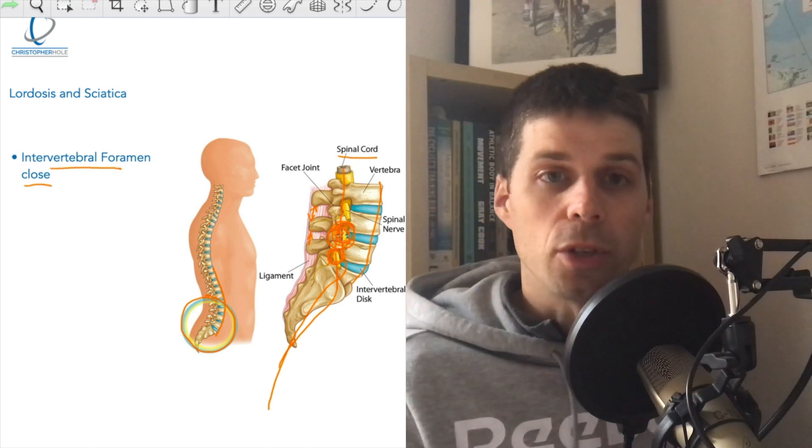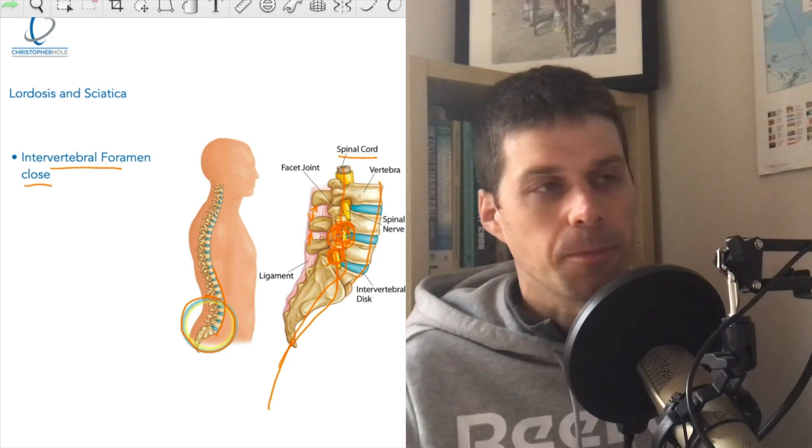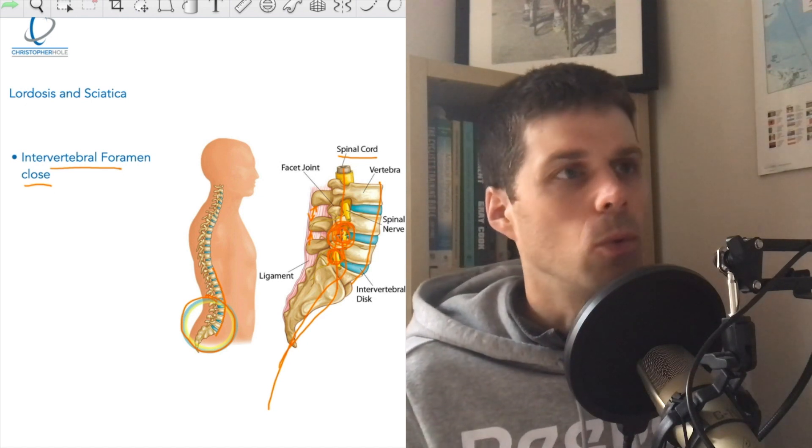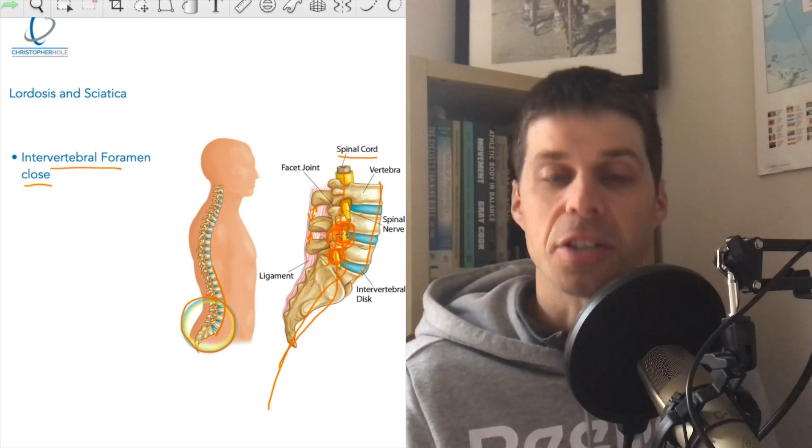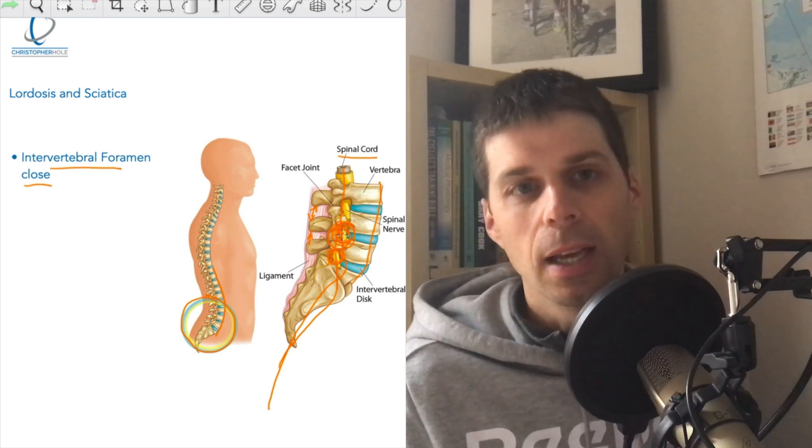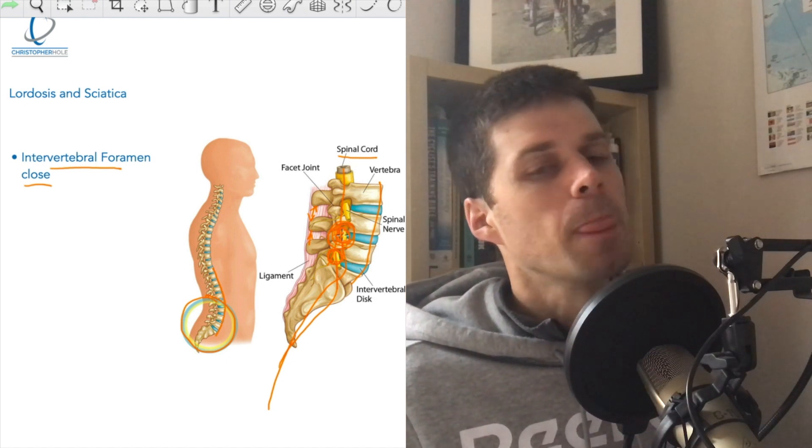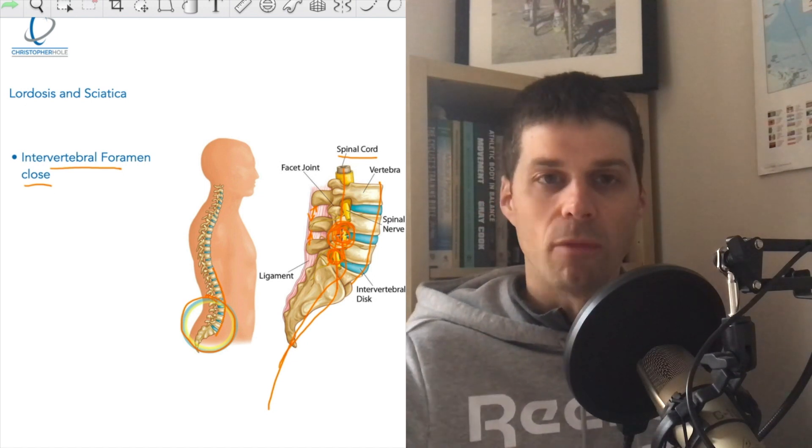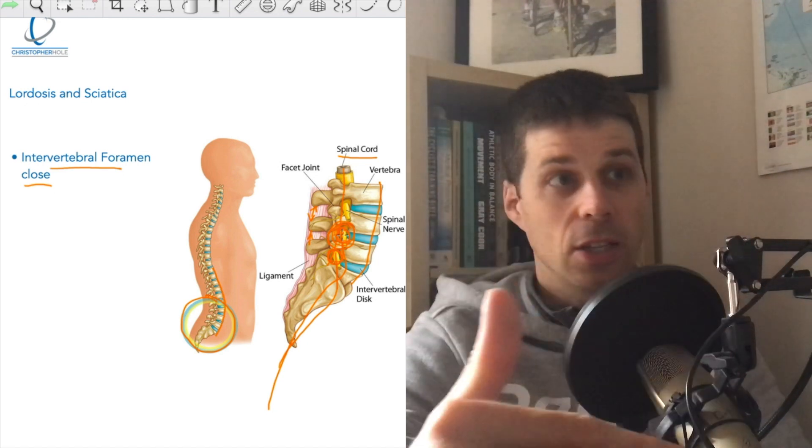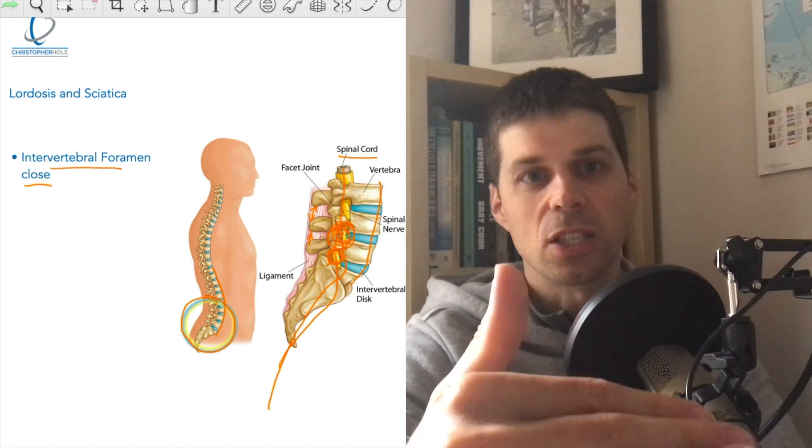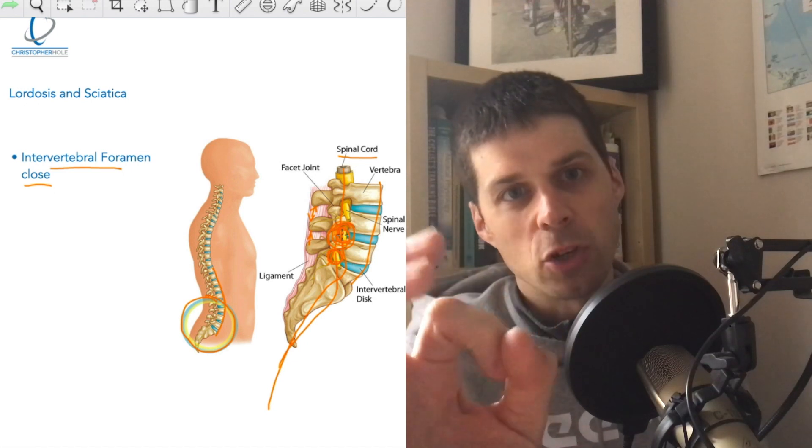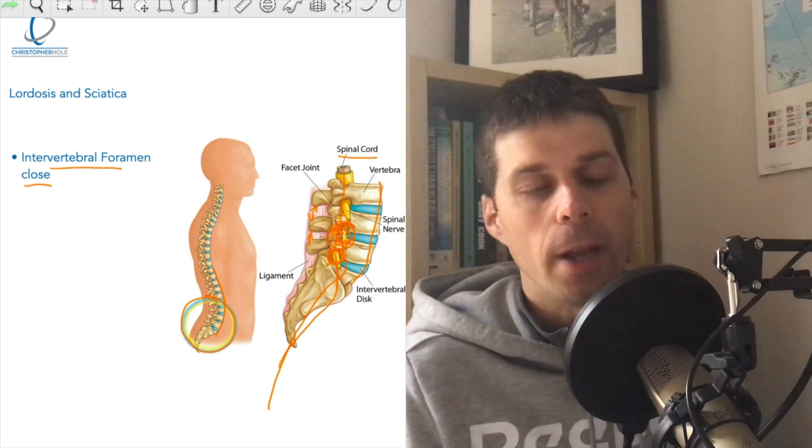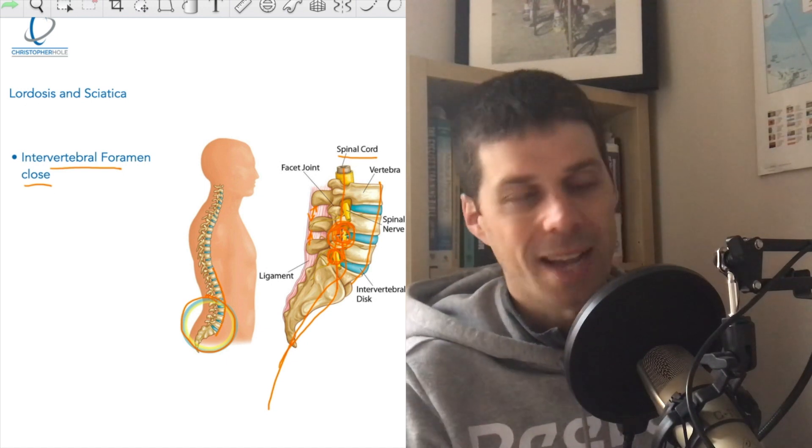So a part of the solution to this is opening out that space. This is something that we need to focus on when we're understanding the lower back pain, understanding the lordosis, and understanding the sciatica that's being experienced. So what we're now going to do is look more specifically at the sciatic nerve. Essentially we've just been zooming in on the spine—sorry, on the sciatic nerve.